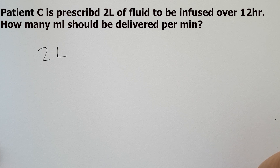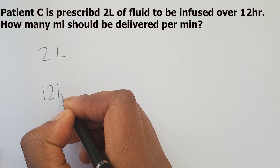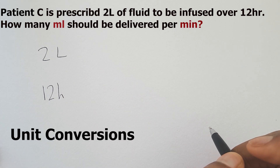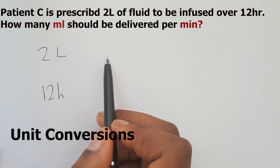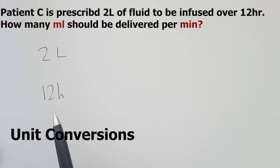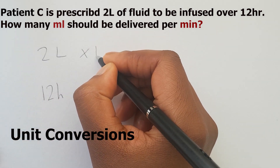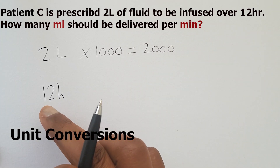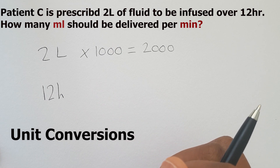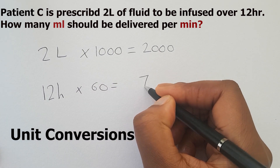The third question: Patient C is prescribed two litres of fluid to be infused over 12 hours. How many mils should be delivered per minute? We have two litres over 12 hours. Our units are in litres and hours, so we need to convert both. To go from litres to millilitres, multiply by 1,000: 2 × 1,000 = 2,000 mils. To go from hours to minutes, multiply by 60: 12 × 60 = 720 minutes.